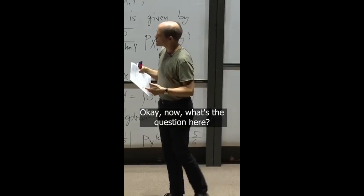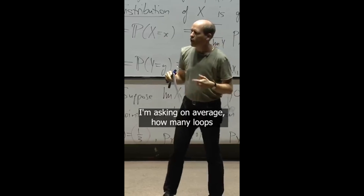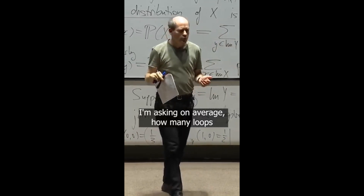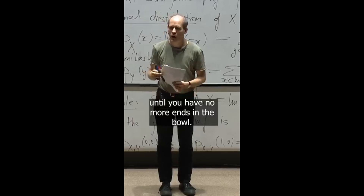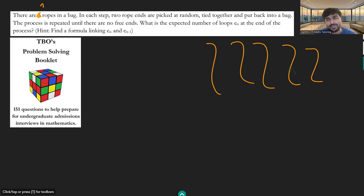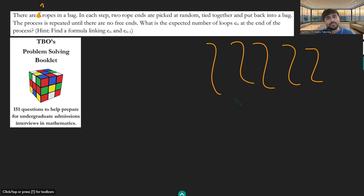The question is: on average, how many loops are you going to form if you keep doing this until you have no more ends in the bowl? We have n strands of spaghetti, and we're going to pick out two different ends at the same time. They could be from the same strand of spaghetti or from different ones, and what we want to determine is the expected number of loops that we form.